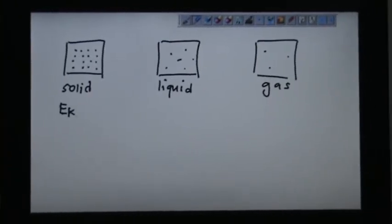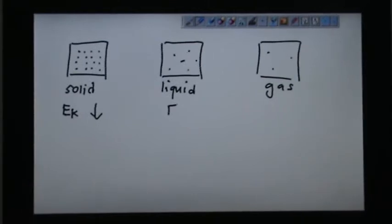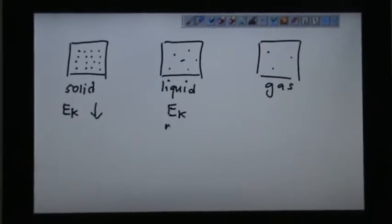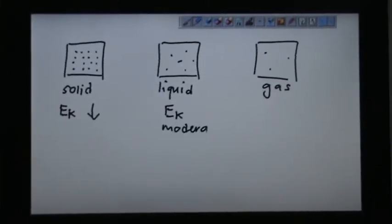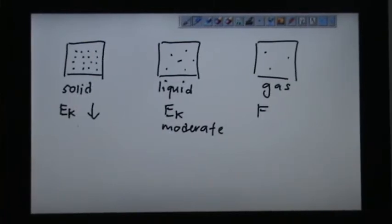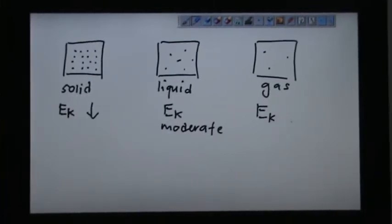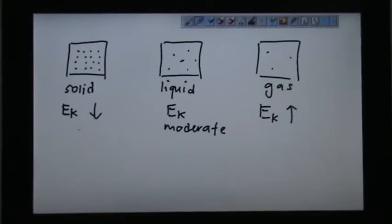So the kinetic energy here is actually the slowest. The kinetic energy here is somewhat moderate. The kinetic energy here is the fastest, the highest. This is due to their own speed.